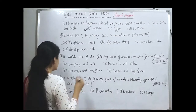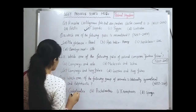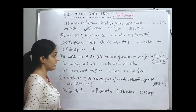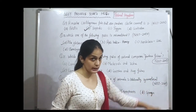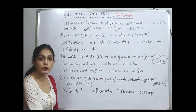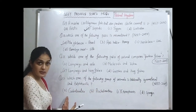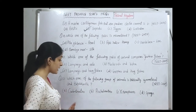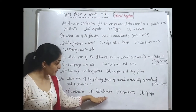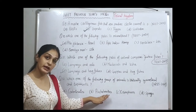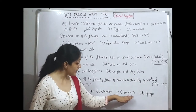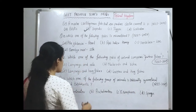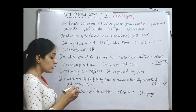Question from 2009: which group of animals is bilaterally symmetrical and triploblastic? The options include various phyla. Coelenterates are diploblastic, not triploblastic. Sponges are asymmetrical. The correct answer is Platyhelminthes (flatworms) — they are bilaterally symmetrical and triploblastic. Option B, Platyhelminthes, is the correct answer.